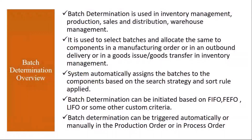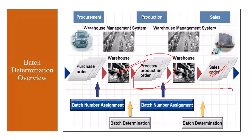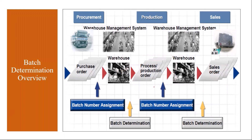Batch determination can be triggered automatically or manually in the production order or process order — I will show both options in the system. Batch determination is not only used in PP; it can also be used in the Sales module and WM module across the entire logistics chain. However, we will be discussing batch determination only from the PP point of view.